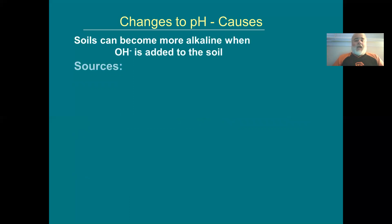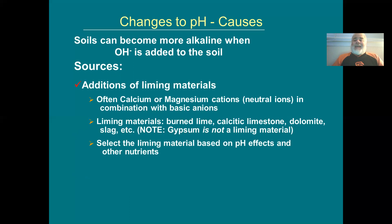Soils become alkaline when you add OH⁻ or anything that absorbs hydrogen ions. These are called liming materials. Liming materials typically contain calcium and magnesium — for example, burned lime, calcitic limestone, dolomite, and slag. Gypsum contains calcium and sulfur but is not considered a liming material; even though it may shift pH slightly, its chemistry is too complicated to classify it as such.